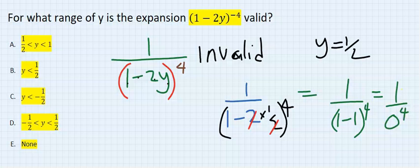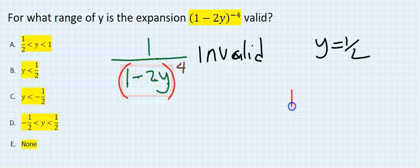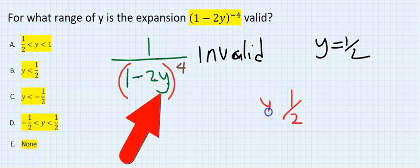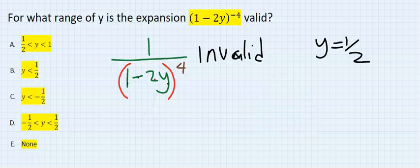That gives us one over (1 minus 1) to the power of four, which is one over zero to the power of four — and this automatically becomes undefined. Getting a negative value here is not a problem; the problem is only when y equals one half. That is when we are going to have a problem, making this expansion invalid.